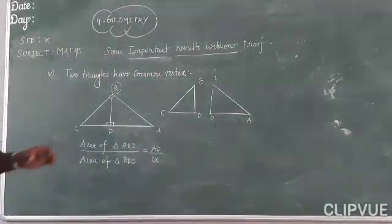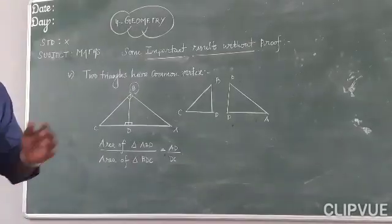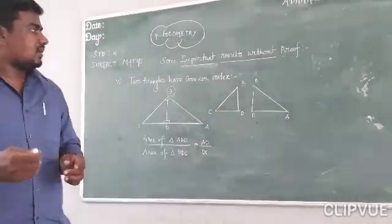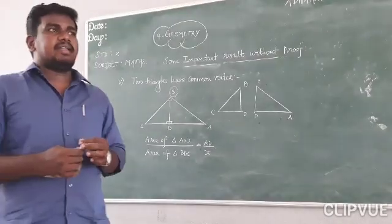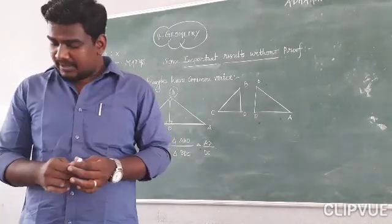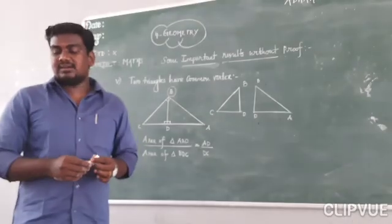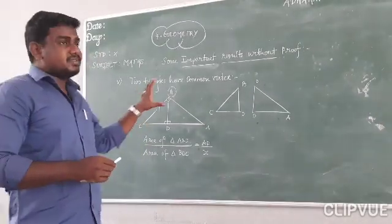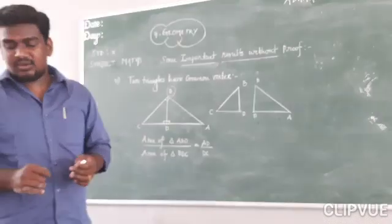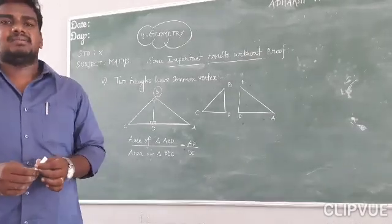Students, we have seen five important results without proof. I have solved two problems related to area and perimeter. The remaining three important results will be used to solve further problems — they may be asked in examinations. In textbook page number 160, all five results are given clearly. After watching this video, go through them once again from one to five. If you go through them again, you will get a better understanding and can solve problems without any difficulty. Thank you.